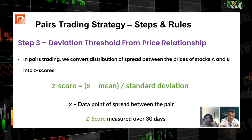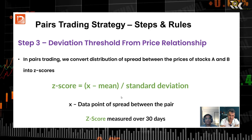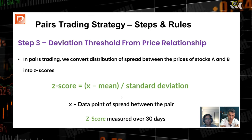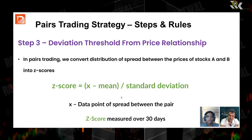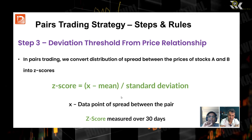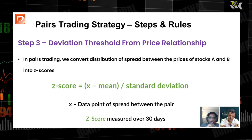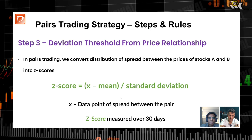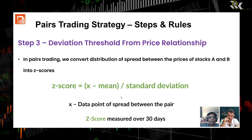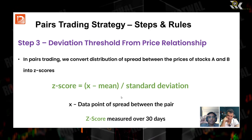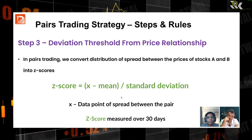Once we've measured correlation, cointegration, and mean reversion, we trade when there is a divergence between the two stocks. For most of the time they are correlated and cointegrated, but whenever there is a small divergence, we want to trade — hoping that they are going to converge again, and from that convergence we are going to benefit.